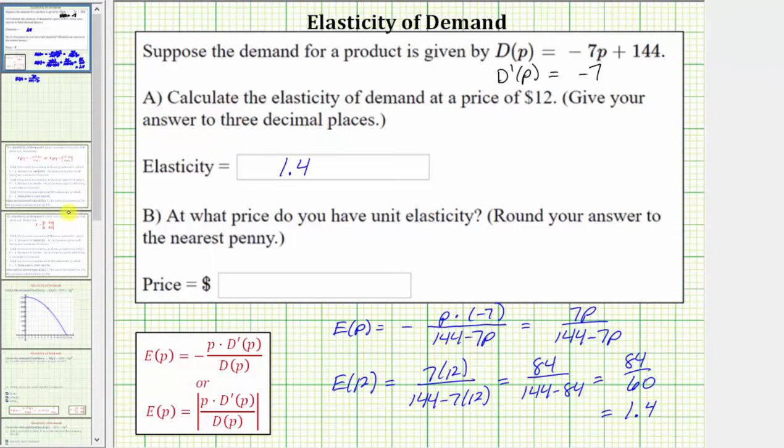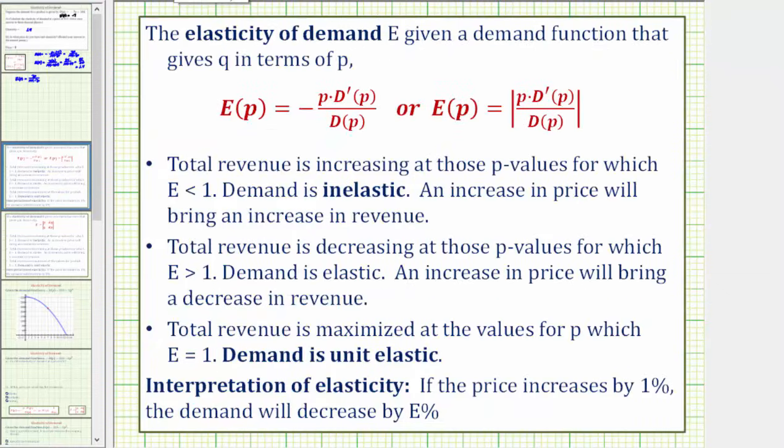Let's review what this tells us. Because elasticity is equal to 1.4, the total revenue is decreasing. Because e is greater than 1, demand is elastic. An increase in price will bring a decrease in revenue.